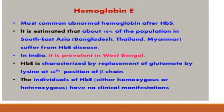Other variants seen mainly due to point mutations include hemoglobin E, which is the most common abnormal hemoglobin after hemoglobin S. About 10% of the population in Southeast Asia — in countries like Bangladesh, Thailand, and Myanmar — suffer from hemoglobin E disease. In India, it is most prevalent in West Bengal.